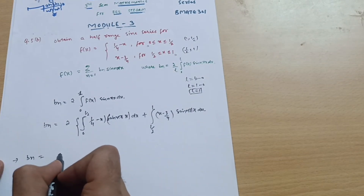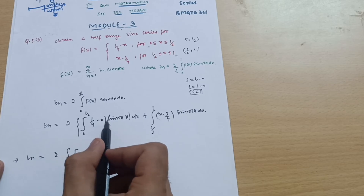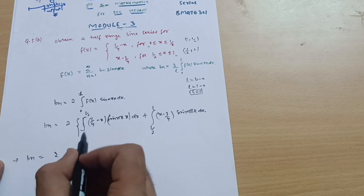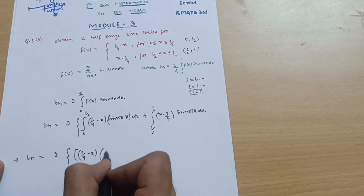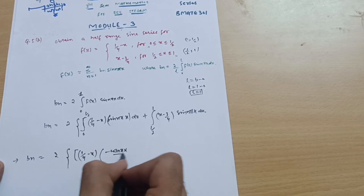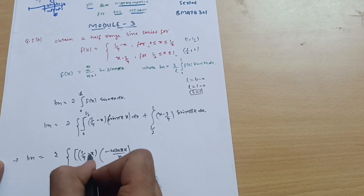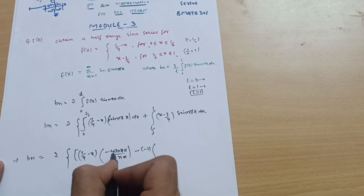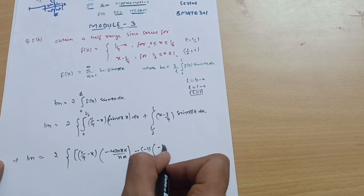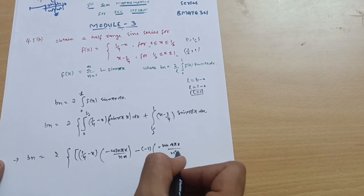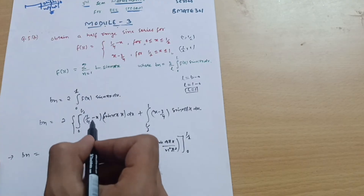Applying Bernoulli's rule of integration to the first integral: keep (1/4 − x) as is, integrate sin(nπx) to get −cos(nπx)/(nπ), then subtract the derivative of (1/4 − x) — which is −1 — times the integral of −cos(nπx)/(nπ), giving −sin(nπx)/(n²π²). Limits run from 0 to 1/2.